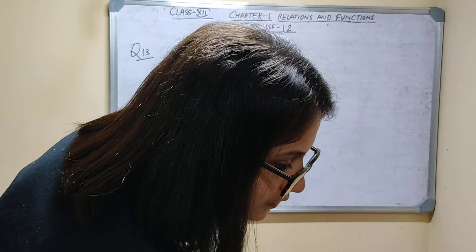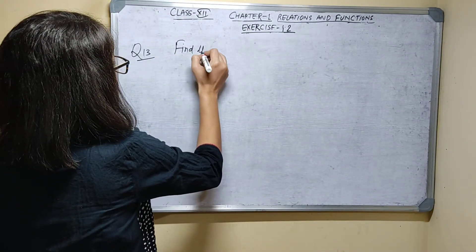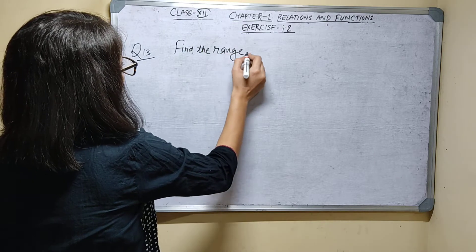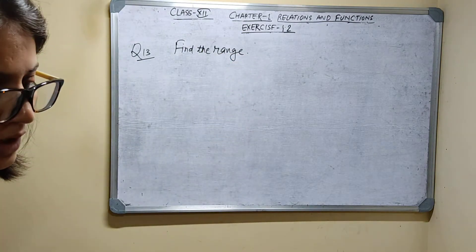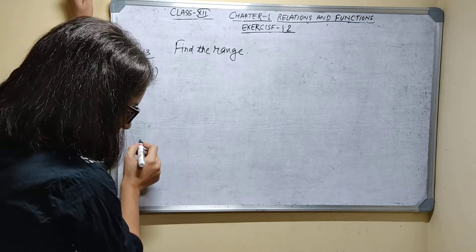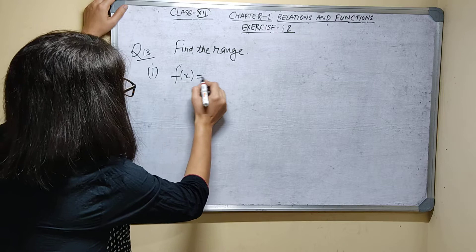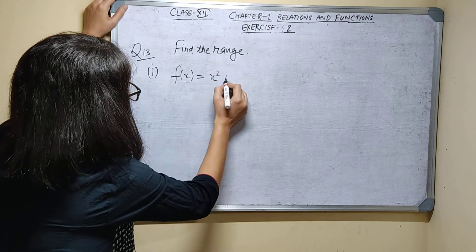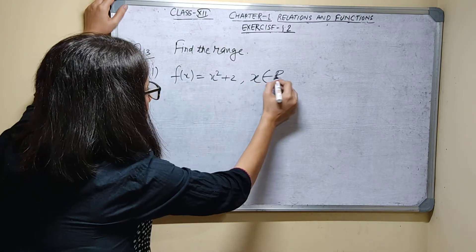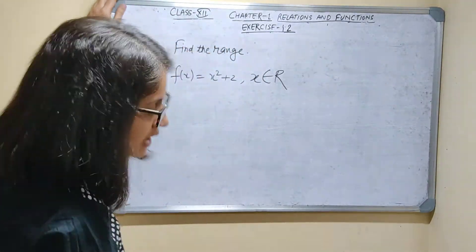Question 13: find the range of the following functions. First function: f(x) is equal to x squared plus 2, where x belongs to all real numbers. Let x be any real number. We know that x squared is always greater than or equal to 0.